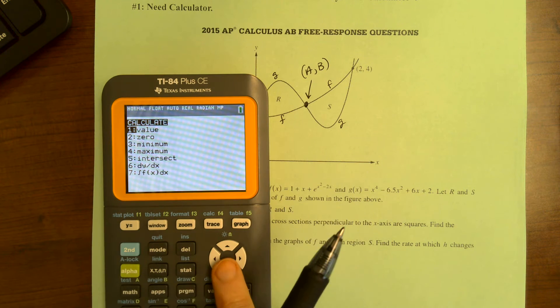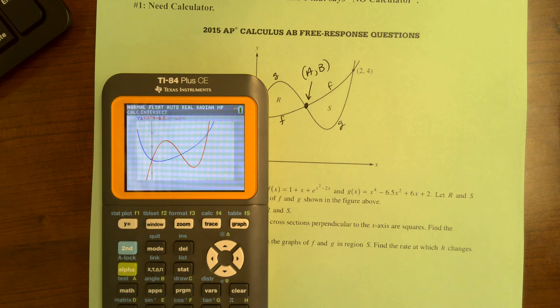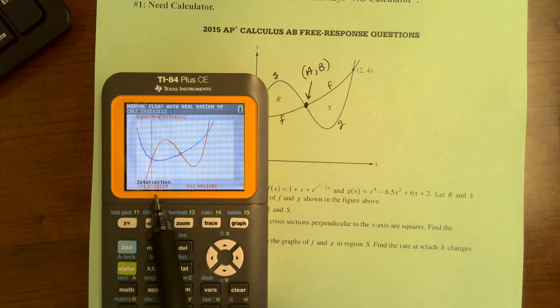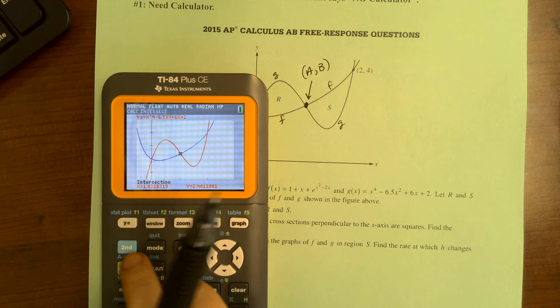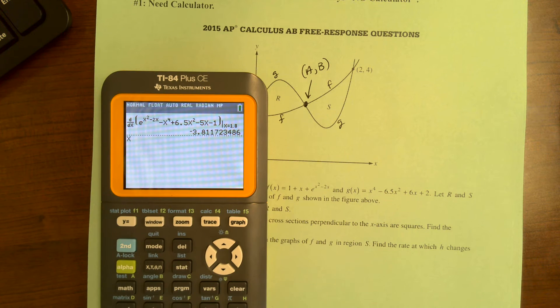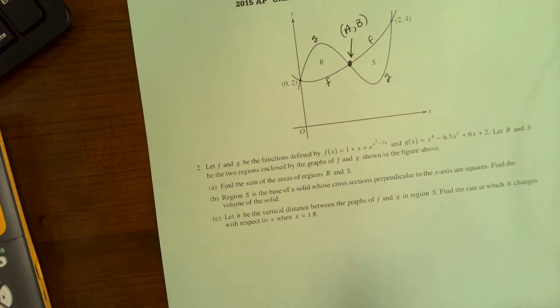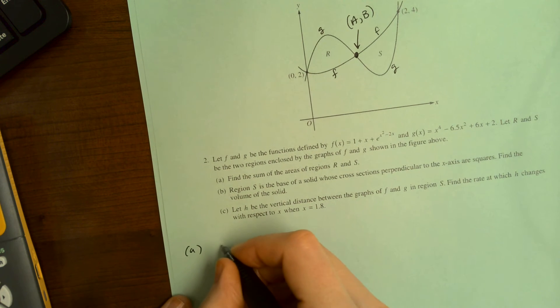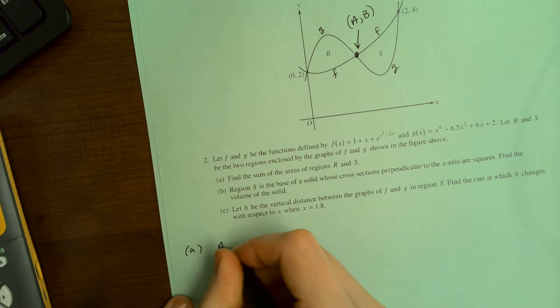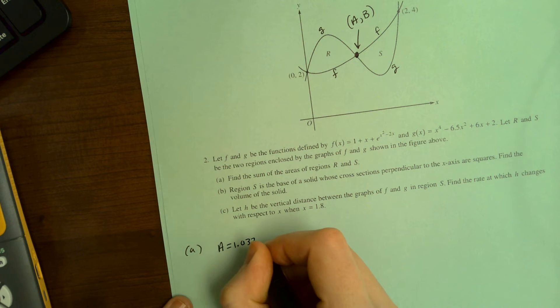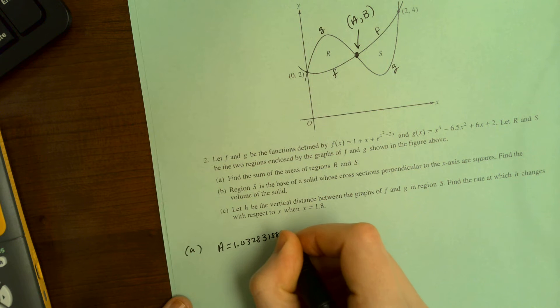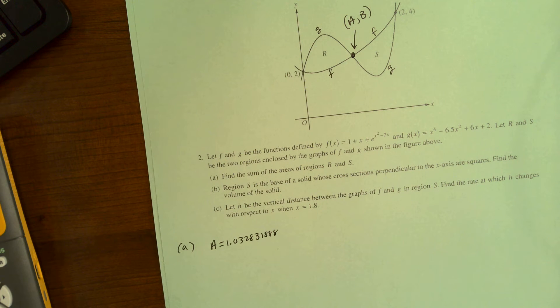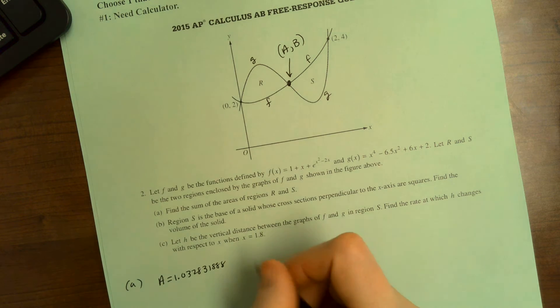So I go second trace intersect. Enter three times. Okay. So that's X. I'm going to store it. So I hit X, I store it. I'll store it as A. And then I'm going to write down here for my reader that I'm letting capital A be 1.0328.